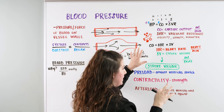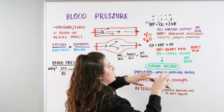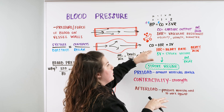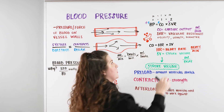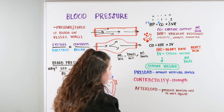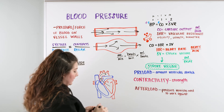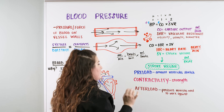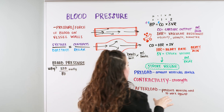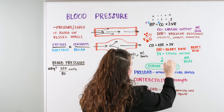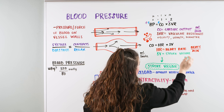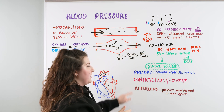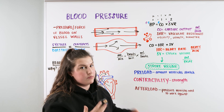The last thing to touch on here is stroke volume. Stroke volume is the amount of volume per beat within the heart, and there are three ways it can be broken down even further.